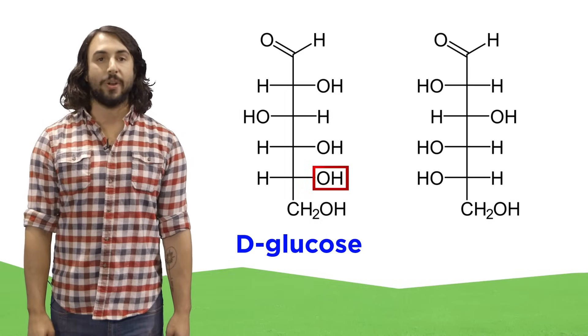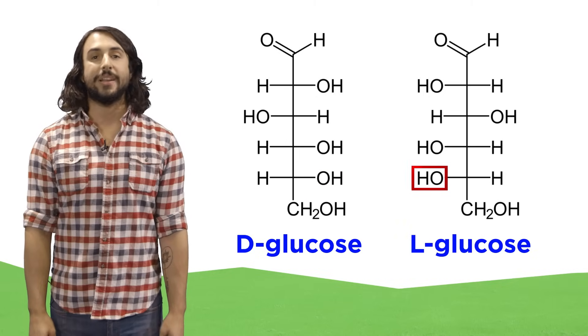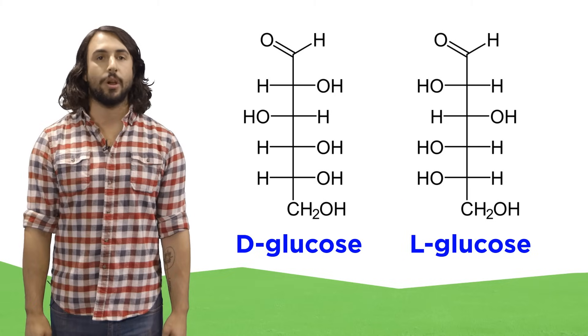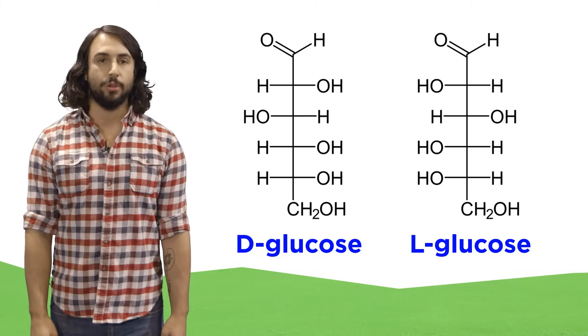If on this carbon, the hydroxyl points right, it's a D sugar. If it points left, it's an L sugar. So we would call this D glucose, and this would be L glucose.